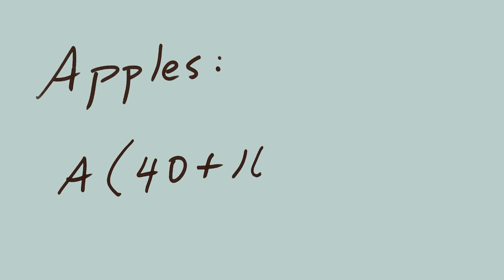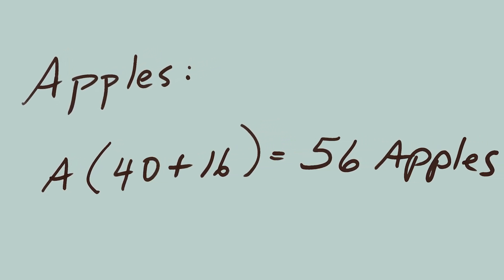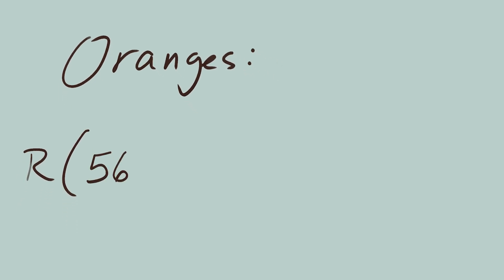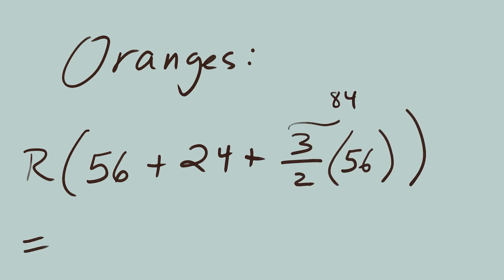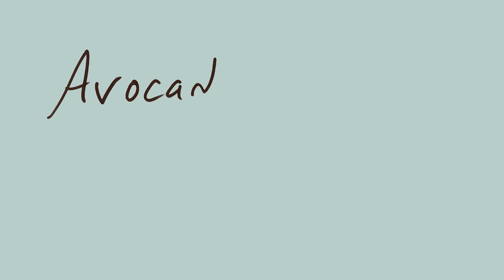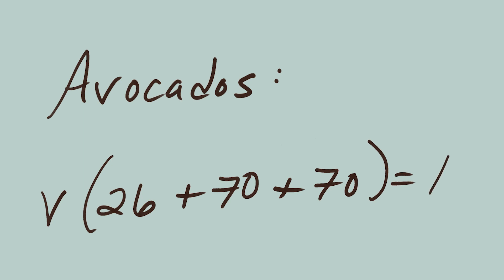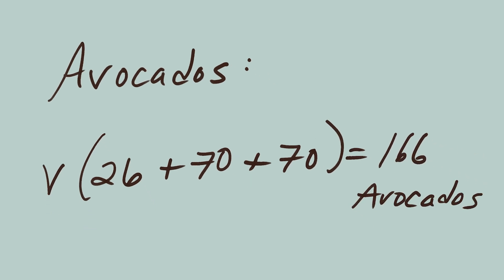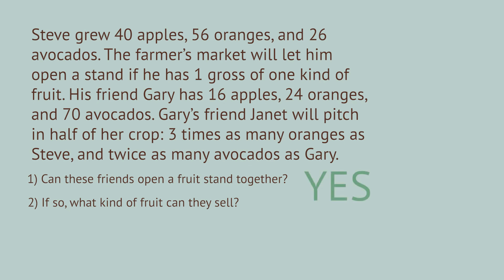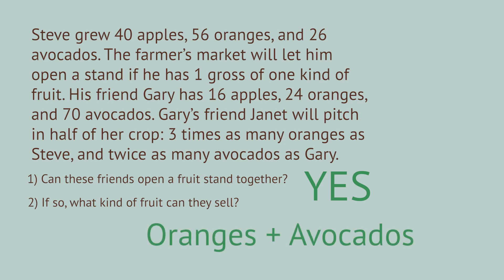How many apples? Pull out the A. 40 plus 16 equals 56 apples. Let's add together the oranges. All the R's are 56 plus 24 plus three halves times 56, which is 84, which equals 164 oranges. Now avocados — add all the V's. 26 plus 70 plus 70 equals 166 avocados. So these three friends can pool their resources and open two kinds of fruit stands.